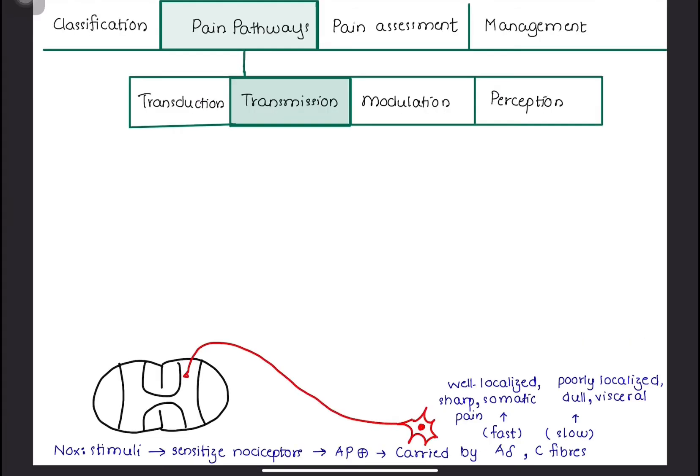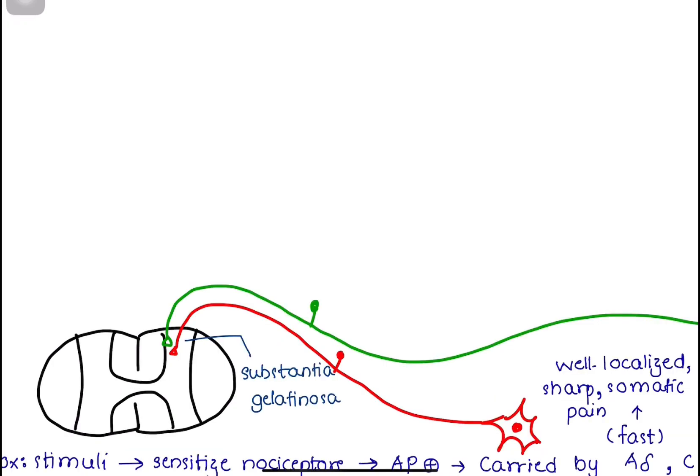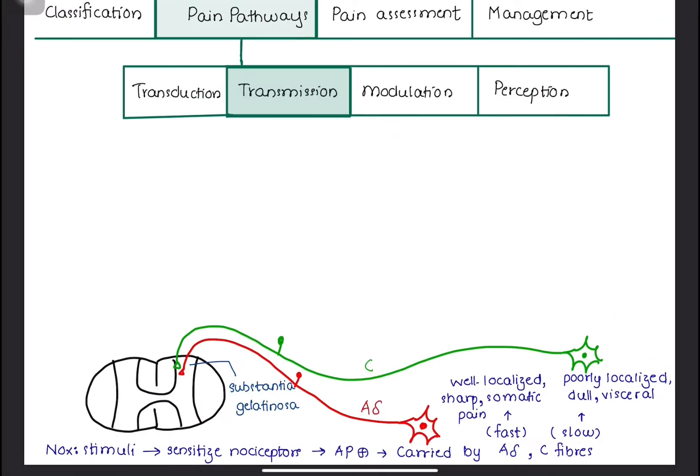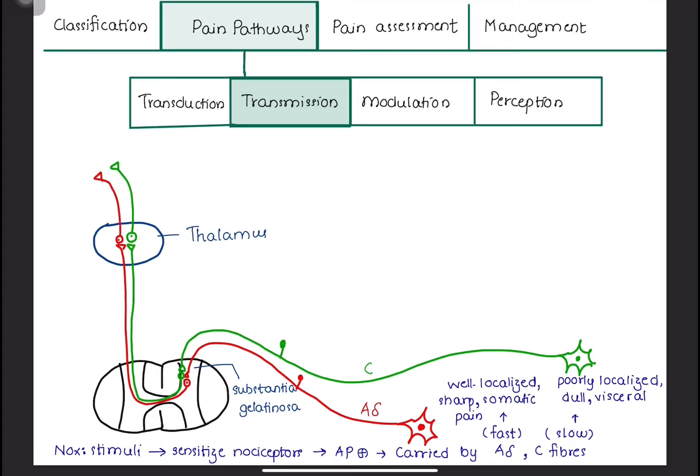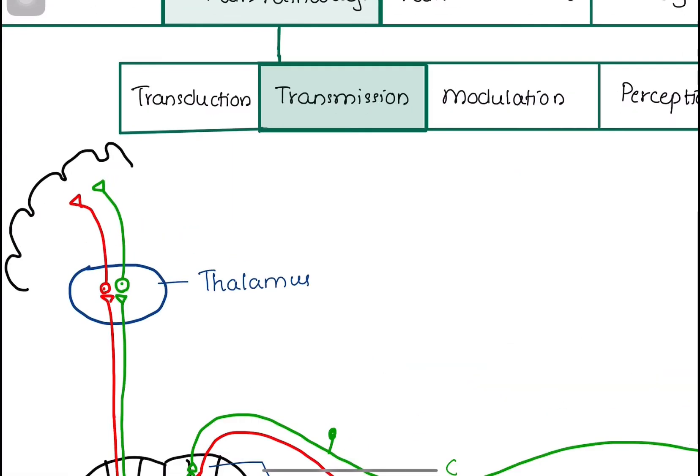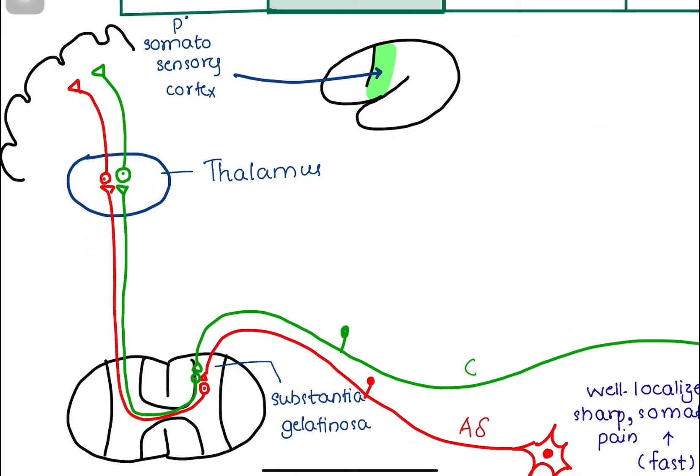These neurons synapse with secondary neurons in the substantia gelatinosa of the dorsal horn of the spinal cord, then cross over to the other side of the spinal cord and ascend to the thalamus. These neurons synapse with tertiary neurons in the thalamus and then travel to the somatosensory cortex, which is located at the post-central gyrus of the brain.